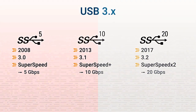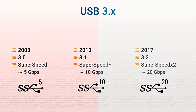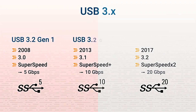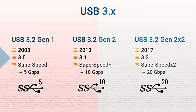The 'times 2' represents the dual lane for two unidirectional data paths for sending and receiving data at the same time. Later, these releases were renamed to conform with the USB 3.2 generational naming convention: Gen1, Gen2, and Gen2x2.